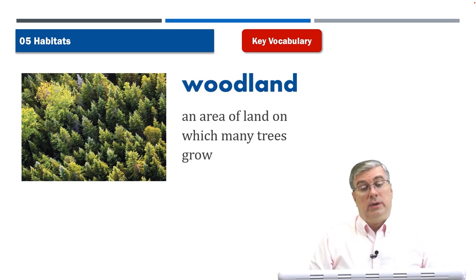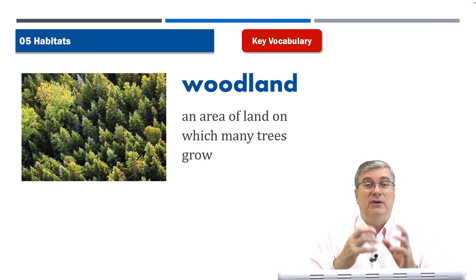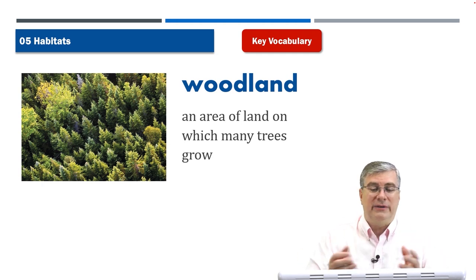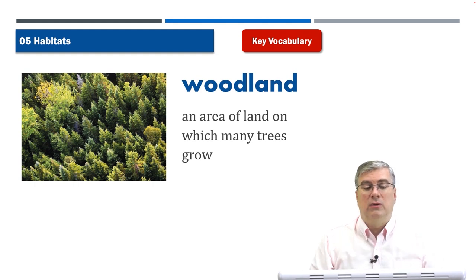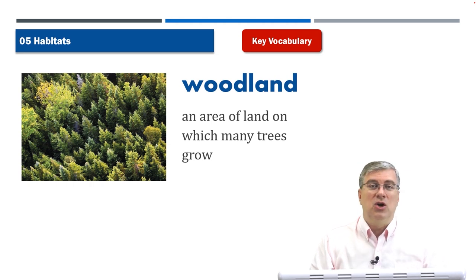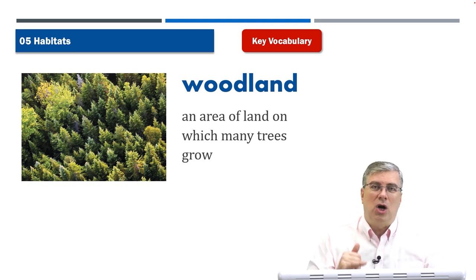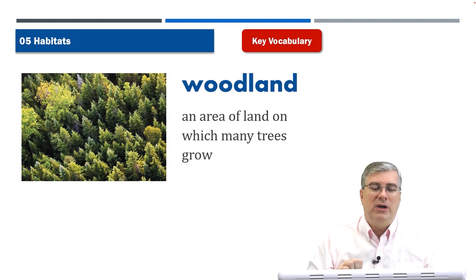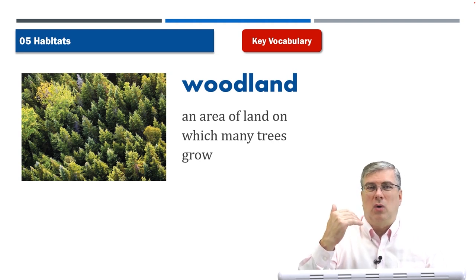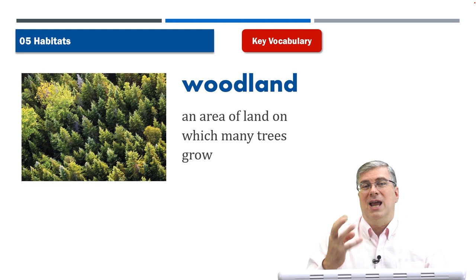Next, 'woodland.' Woodland is an area of land on which many trees grow. 'Wood' refers to a forest of many trees. Most people live around woodlands — in Europe, Asia, and North America there are many woodlands. Woodlands are a little cooler than jungles. Jungles are like woodlands but in hot, humid environments. Woodlands are usually more northern or southern and cooler, and not as humid.